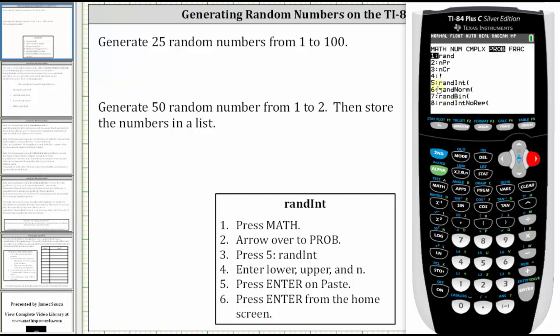And now we select 5, randInt, by pressing 5. Now we enter the lower and upper bounds, n, which is the number of random numbers, and then press ENTER on Paste.